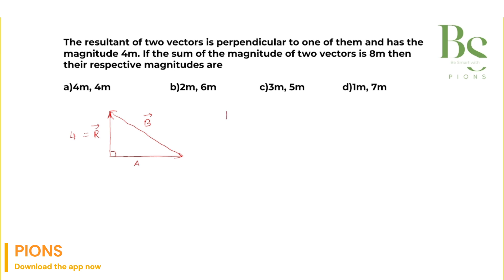Here it is given that magnitude of A plus magnitude of B is nothing but 8. So what will be the magnitude of B? That will be 8 minus A. Let A equal x, so the magnitude of B is 8 minus x.